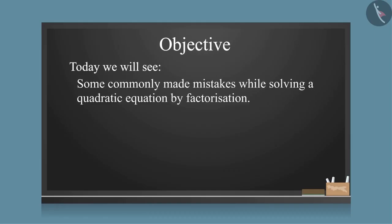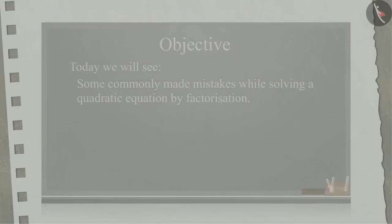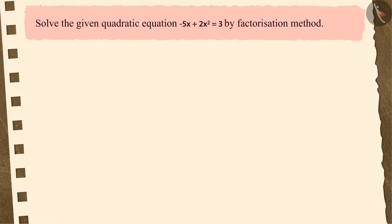Now, we will look at some commonly made mistakes while solving a quadratic equation by factorization. Solve the given quadratic equation -5x + 2x² = 3 by factorization method.